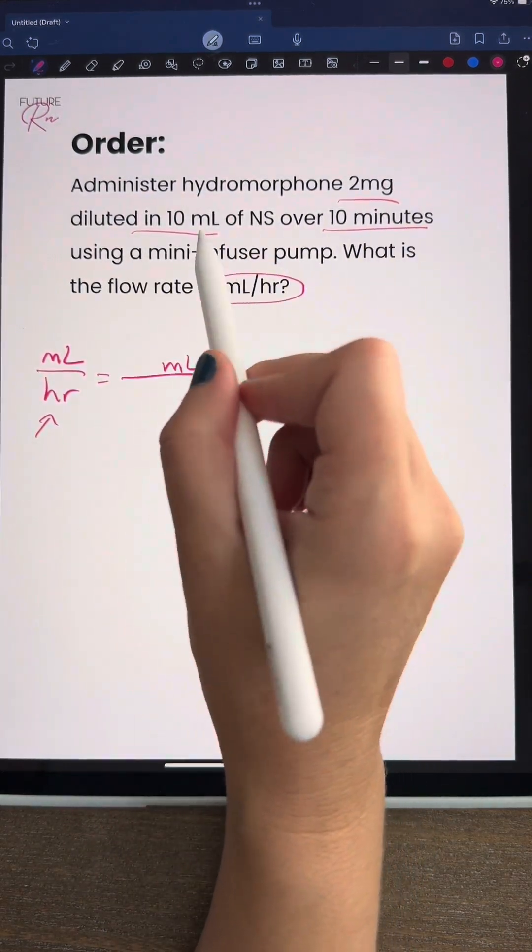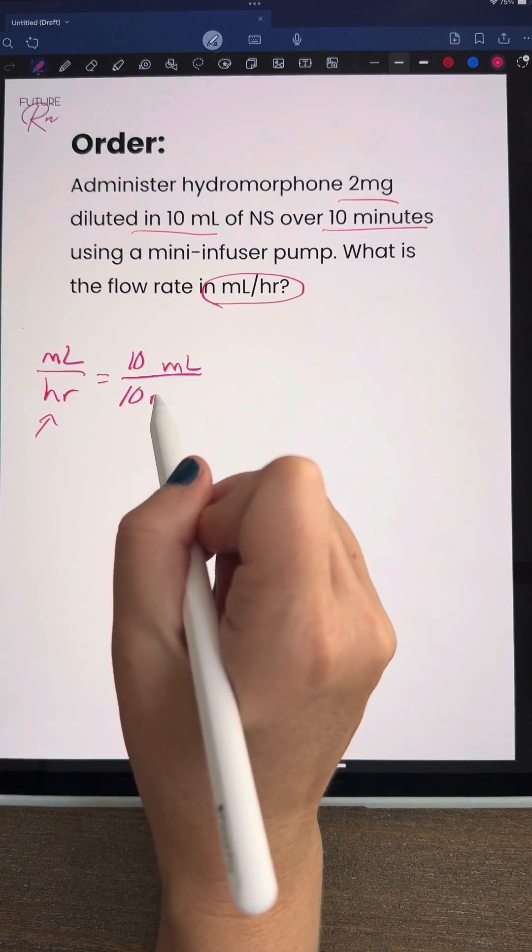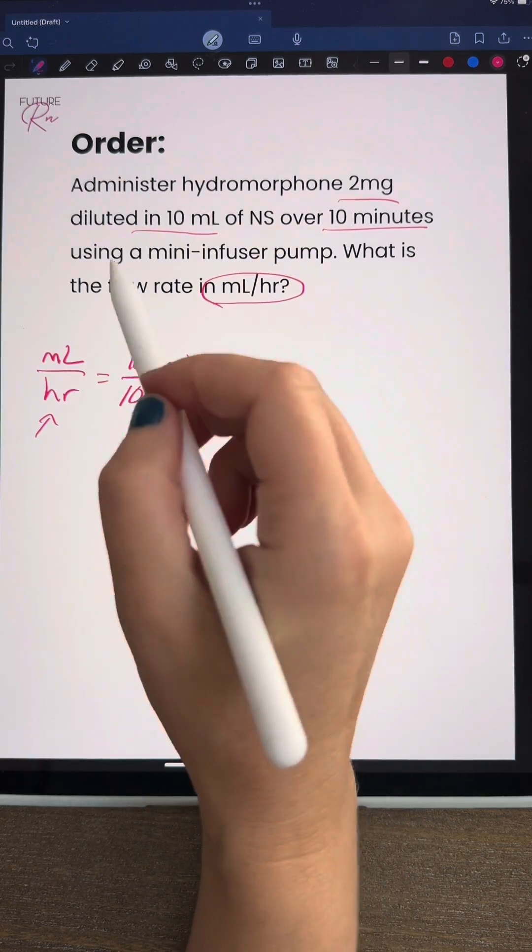We're going to go to our problem and we have 10 milliliters per 10 minutes. We're going to insert that here.